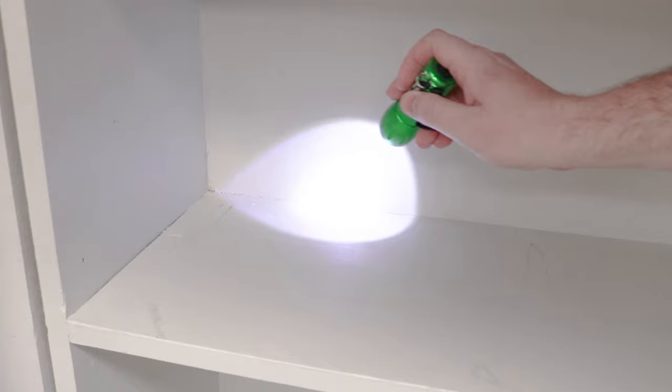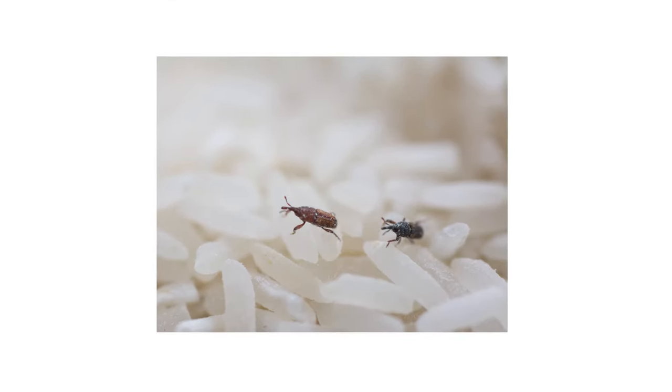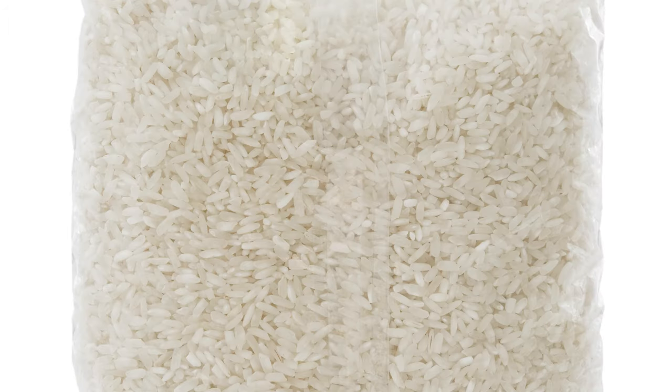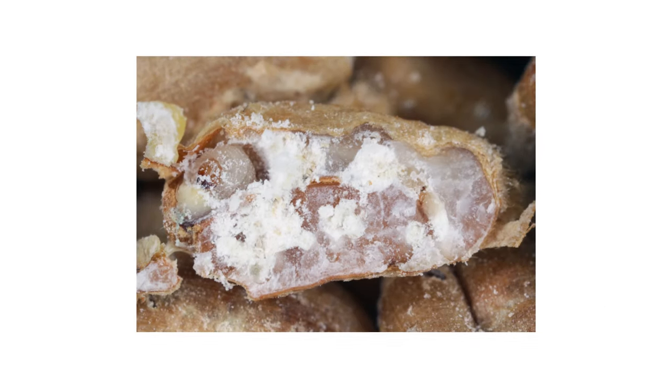Be sure to also check any cupboards, drawers, and shelving. If you're wondering how you got rice weevils in the first place, the most likely reason is that you bought infested food from the grocery store and brought them in. Most of the time, that bag of flour or rice you just bought was harboring these pests. Even if you didn't see the adults crawling around, the eggs and larvae could be in there going unnoticed.